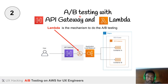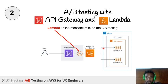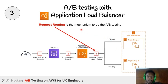The second way is using API Gateway and Lambda. Here, Lambda is the key mechanism — Lambda is attached to the API Gateway, which goes through an Application Load Balancer and splits the traffic sent to container A and container B.